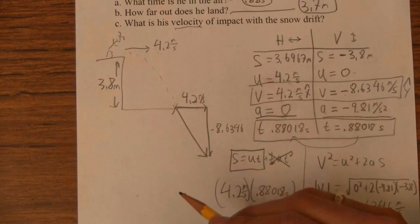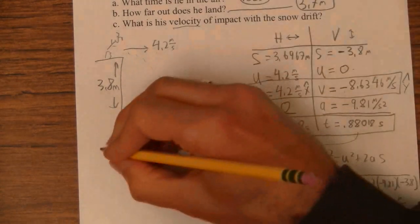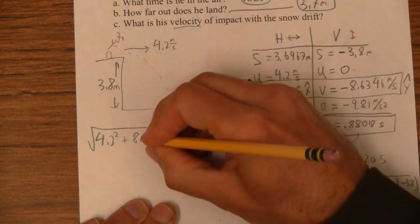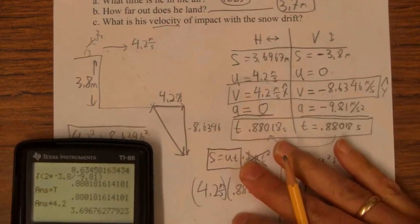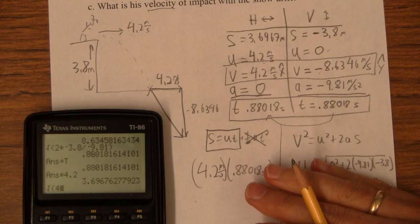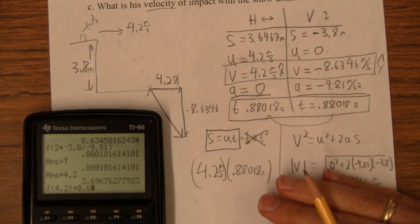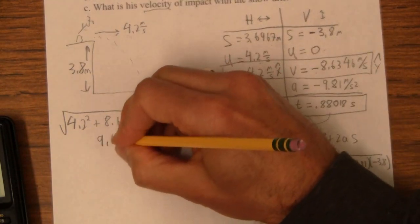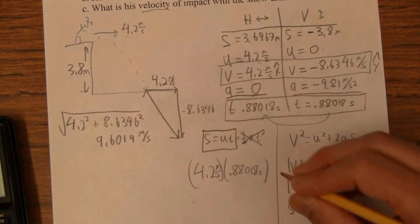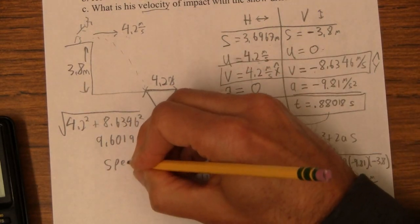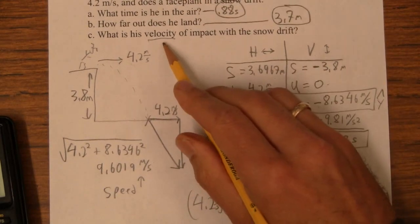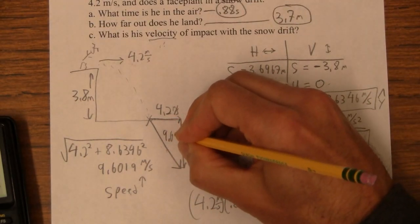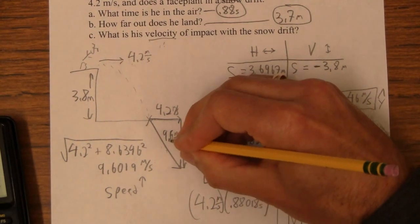So the magnitude of that impact, the speed with which he hits the ground, the magnitude is the square root of 4.2 squared plus 8.6346 squared. So square root of 4.2 squared plus 8.6346 squared. And that's 9.6, I get 9.6019 meters per second. This would be the speed. The magnitude of the velocity vector is the speed. So if they ask for the speed of impact, that's what you're going to say is that hypotenuse. It's not this one, it's not that one, it's this guy. This guy's 9.6 meters per second.